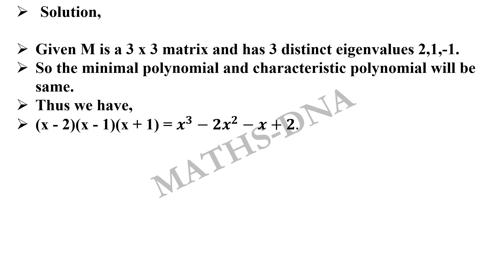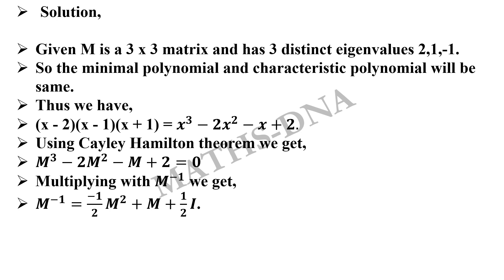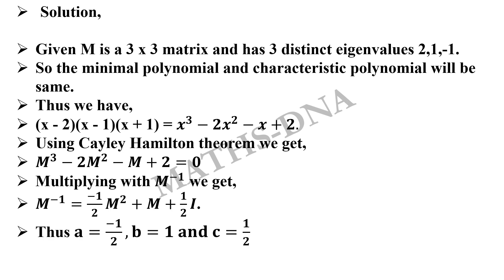Now from the Cayley-Hamilton theorem, which says that every matrix satisfies its characteristic equation, we get M³ – 2M² – M + 2 = 0. We need to find the values of a, b, and c for the equation of M inverse. Multiplying this equation by M inverse and simplifying gives us M inverse equals –(1/2)M² + M + (1/2)I. Comparing this with the given equation, we get a equals –1/2, b equals 1, and c equals 1/2, which is option b.